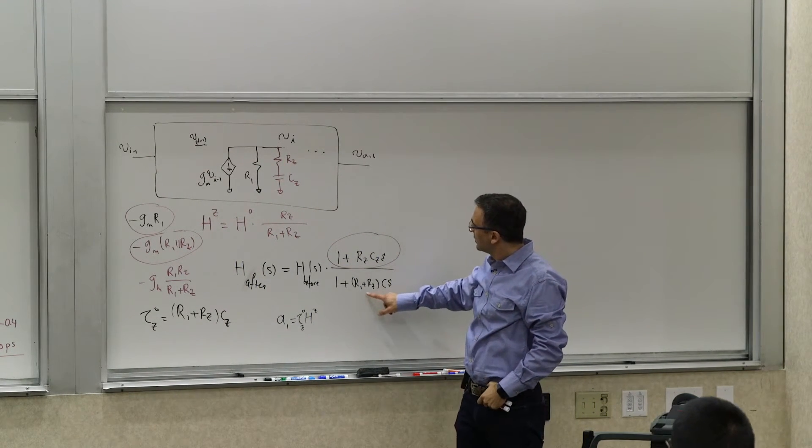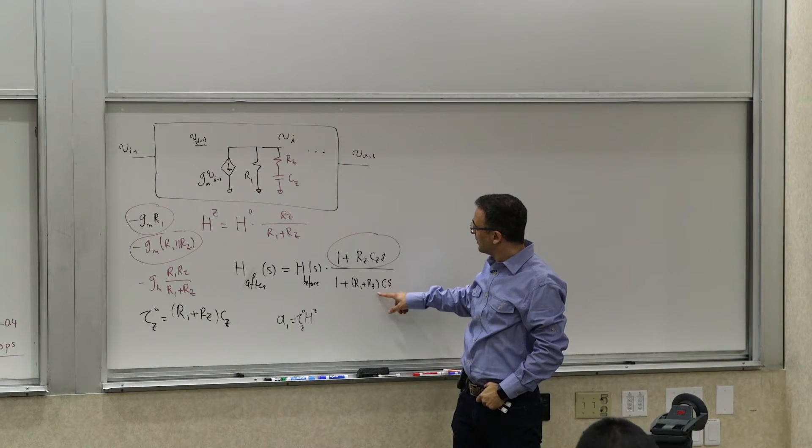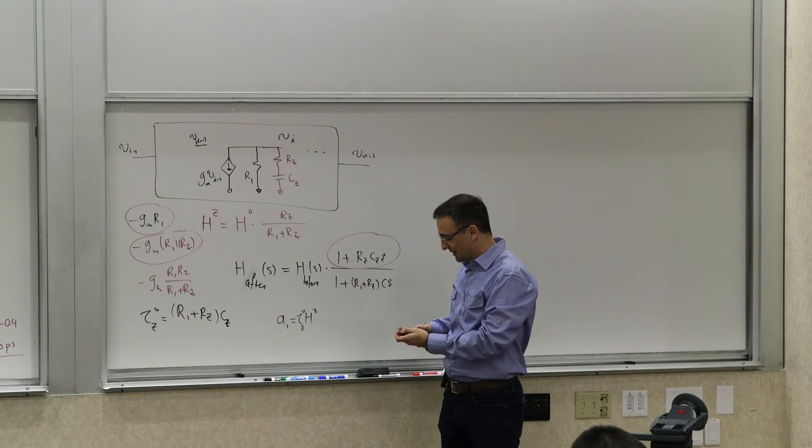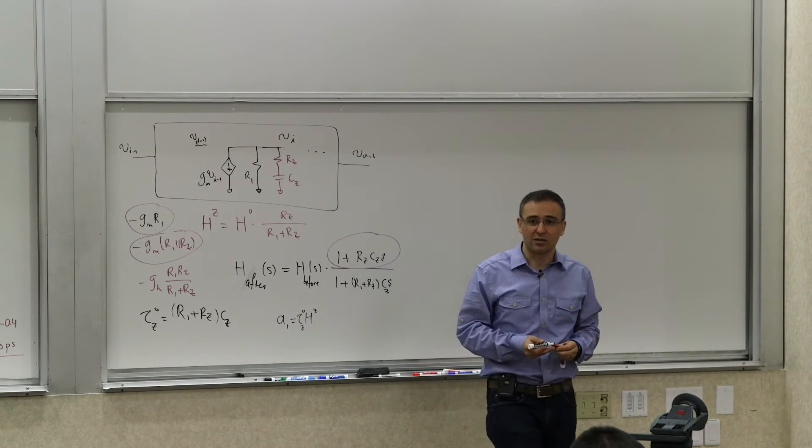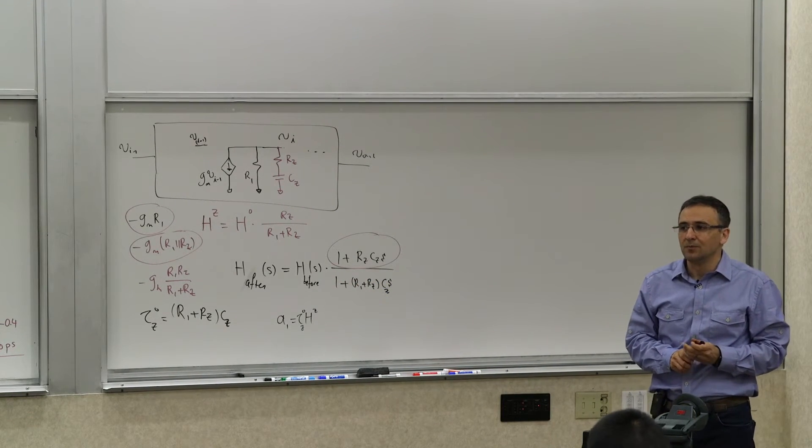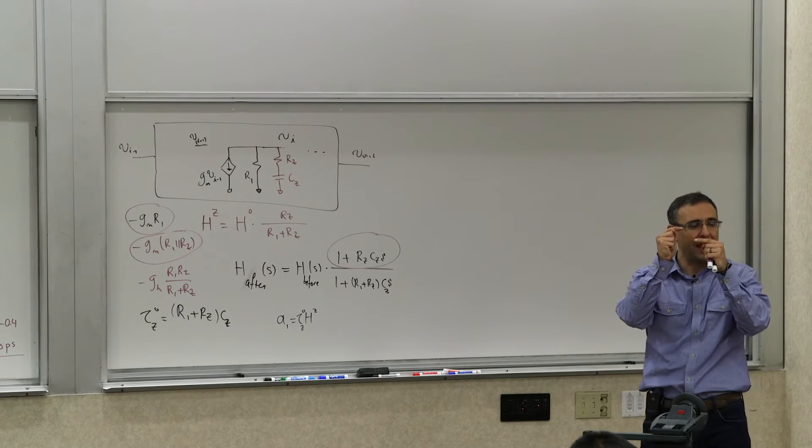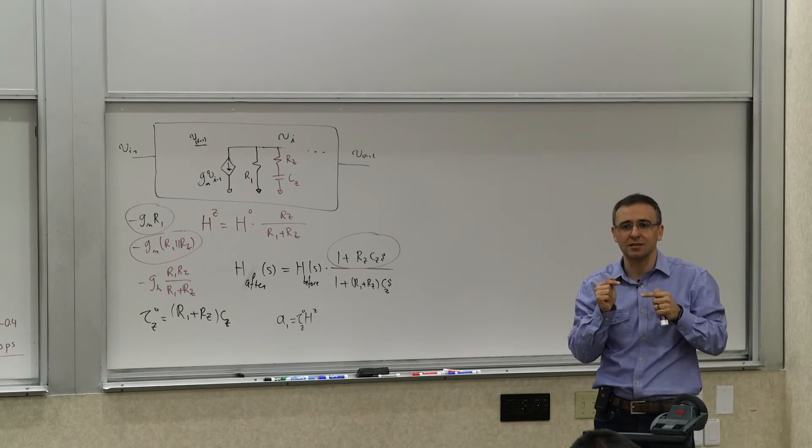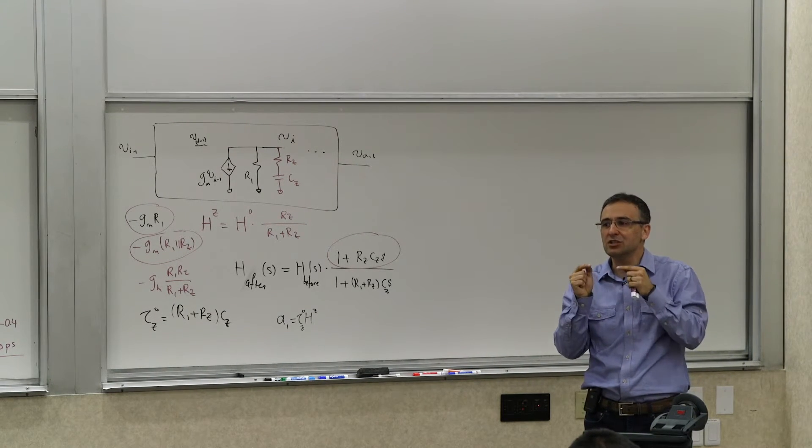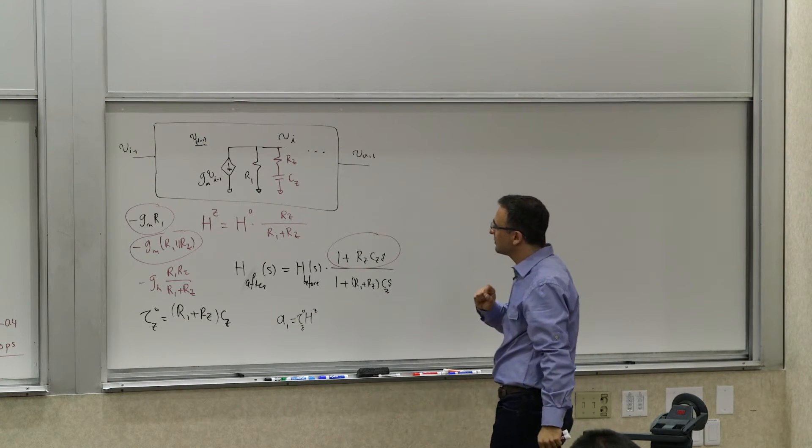That zero is actually easily calculated because the zero is essentially the product of these two. And the pole, it introduces also a pole that's basically determined by Cz and R1 and Rz.